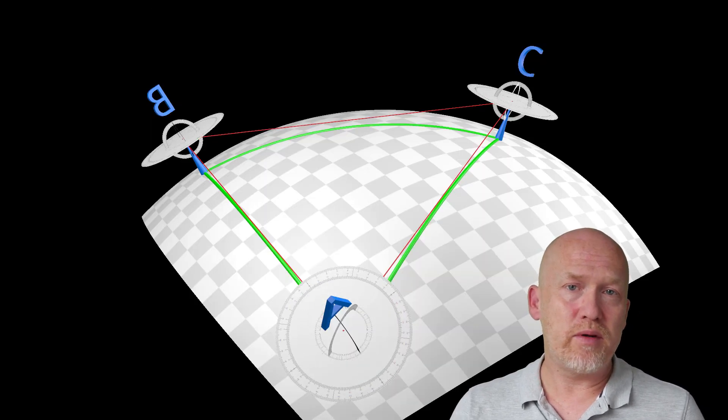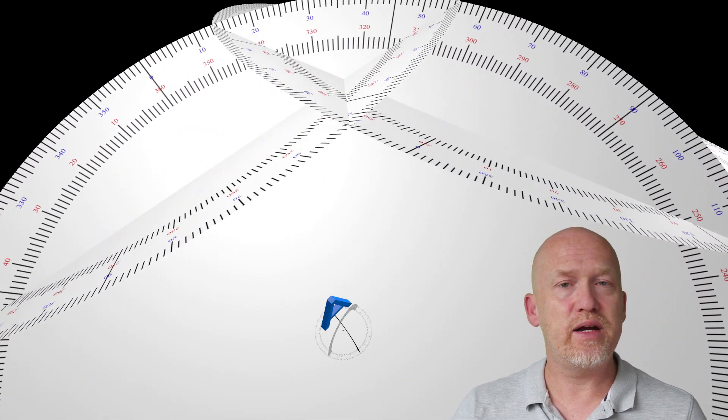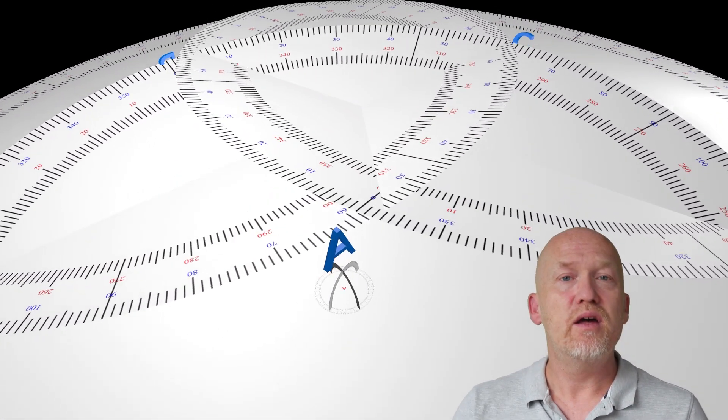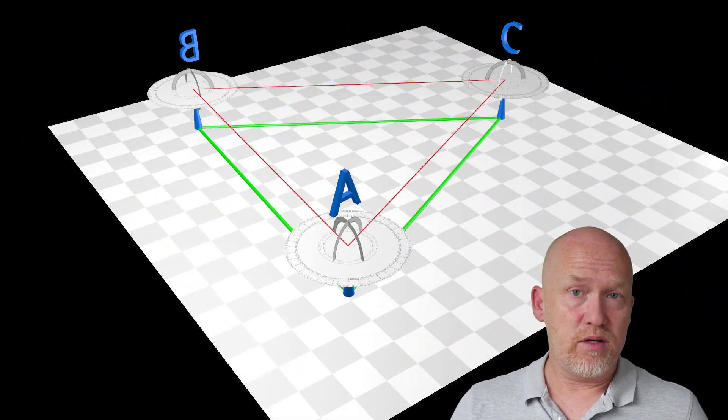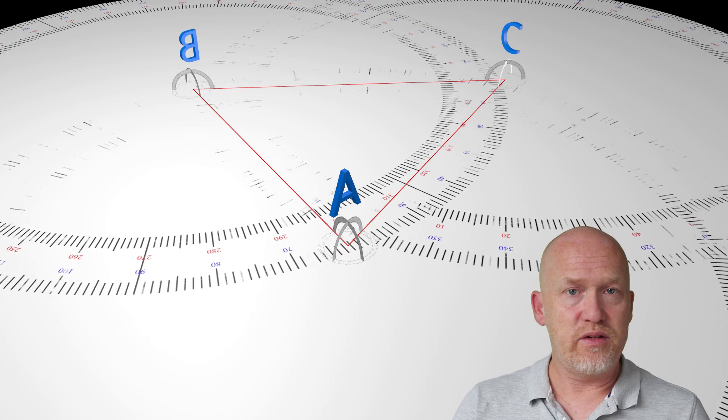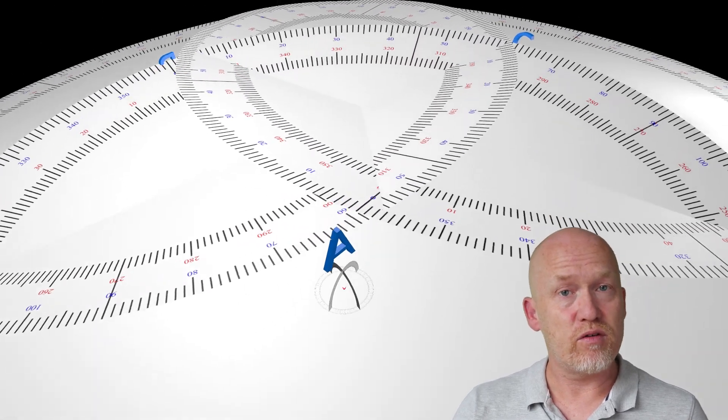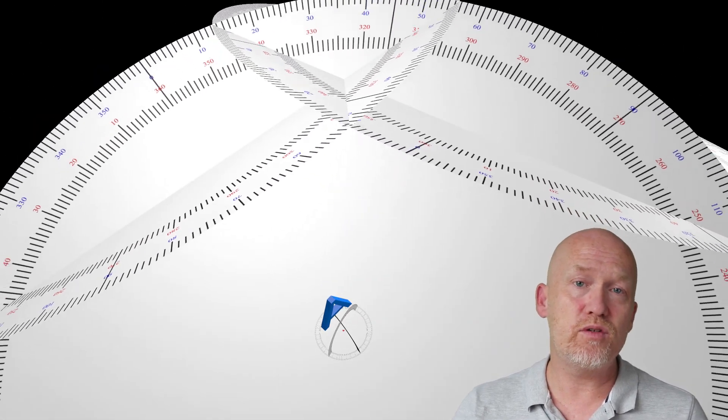So basically, the problem arises because the flat triangle is not co-planar with the protractors. In real life, when you measure an angle with a theodolite, you first level the device and then you pivot horizontally between the two points you want to measure.